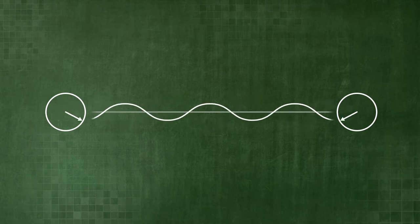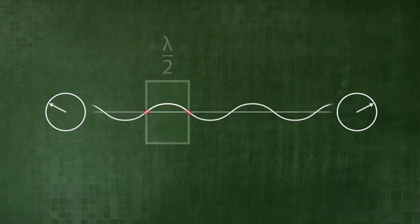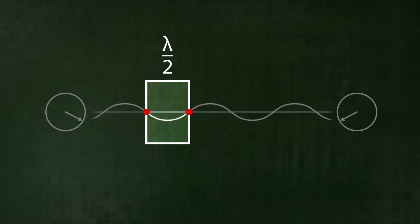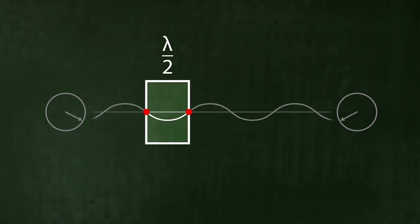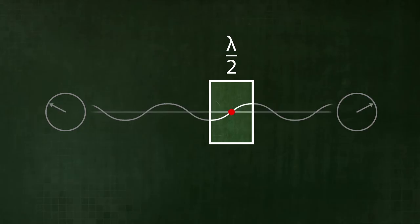There are generally two different types of framework conditions. There can be either nodes or antinodes at the edge. Physically, this corresponds to either a closed end or an open end.